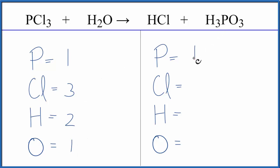On the product side we have one phosphorus, one chlorine, one hydrogen, plus we have these three hydrogens. So we have a total of four hydrogen atoms and then three oxygen atoms.